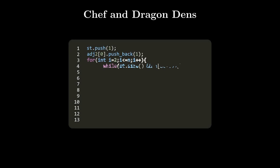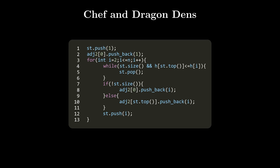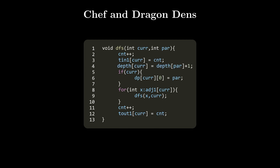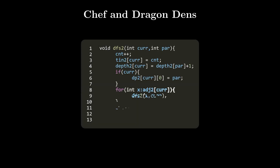The other tree is built in the exact same way, only traversing the array in the opposite direction. The DFS function for the first tree uses a timer (count) that increments every time we enter or exit a node, updating T_in and T_out accordingly. Depth stores the current depth. dp[node][0] stores the 2^0-th ancestor (the parent), used for binary lifting. DFS2 works identically but for the second tree.